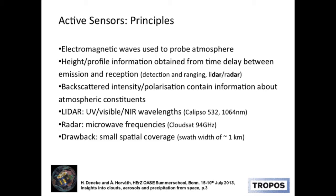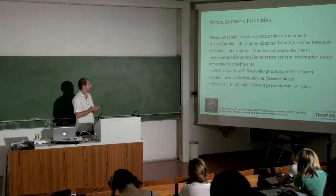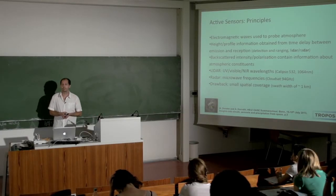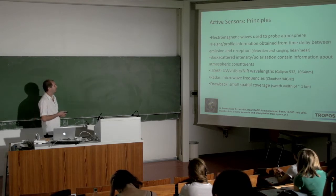Active sensors use electromagnetic waves to probe the atmosphere. The acronym RADAR stands for Detection and Ranging — you emit a pulse of electromagnetic radiation and look at the time delay. The strength of the received signal tells you where the signal is originating from, and by looking at the backscattered intensity you can infer something about the atmosphere — whether it's clouds or precipitation. Additional constraints include polarization and Doppler spectra.